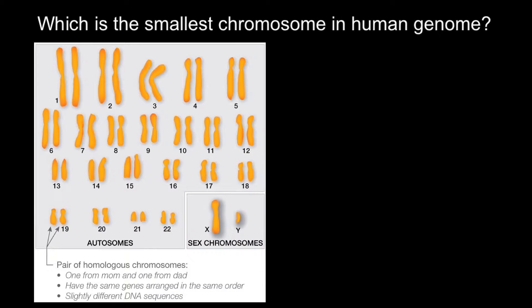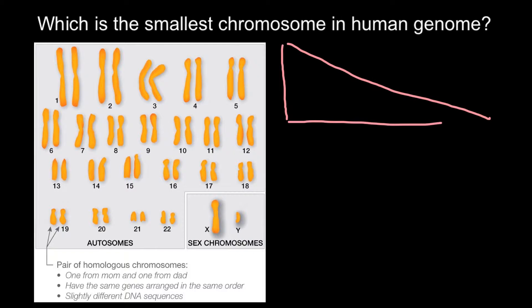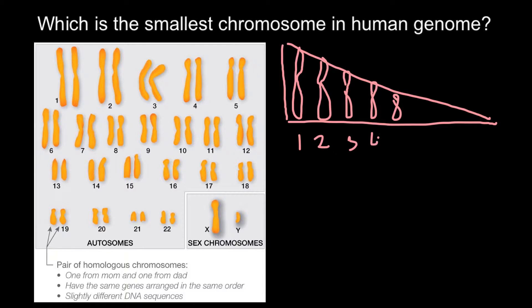A karyotype is organized so that chromosome number one is the biggest chromosome, then chromosome number two is second in length, then chromosome number three, and so on. The smallest would be the last one. But because sex chromosomes are set apart from the rest, the question is: which chromosome is the smallest — chromosome number 22 or the Y chromosome?